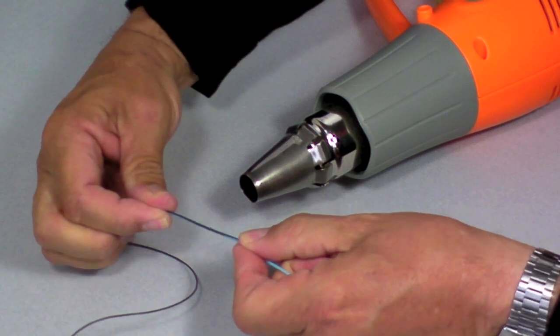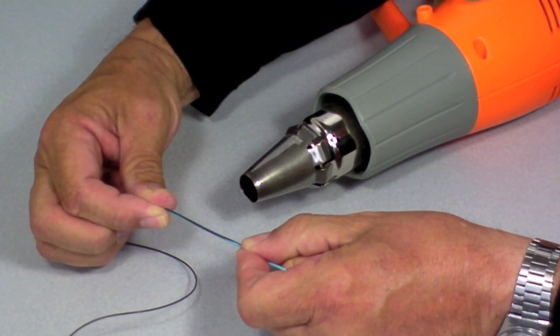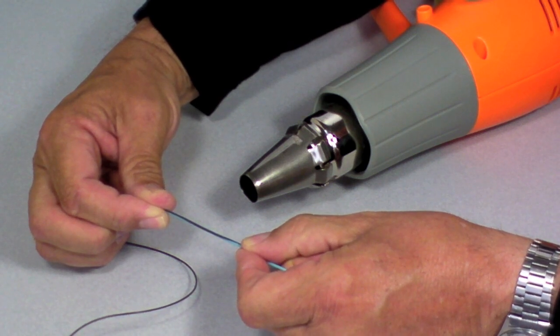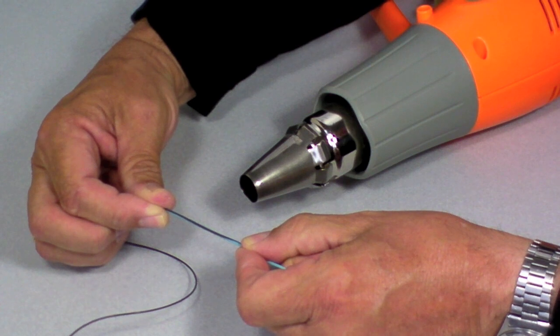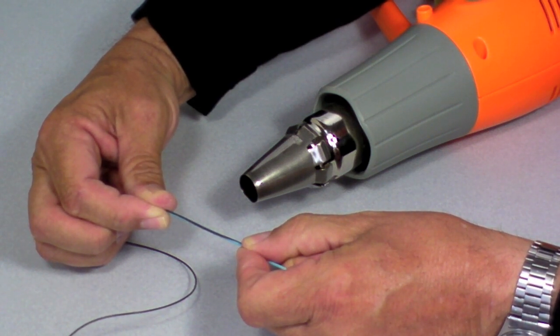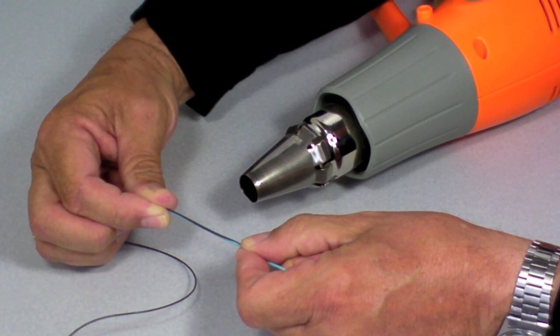I would suggest practice on some scrap first before you try and do this on a good fly line. It does take some trial and error, and yeah, I screw up a few times and have to cut it off and start over. It's quite common, so don't worry about demanding perfection from yourself right off the bat. You will get a few failures.